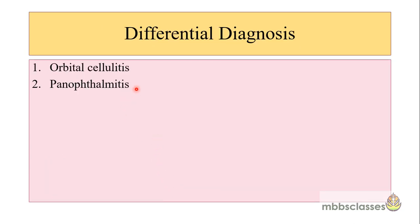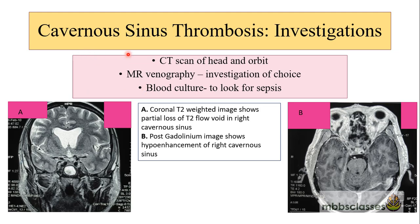For investigations, the patient is advised CT scan of the head and orbit, and MR venography, which is the investigation of choice. When the patient has chills and rigors, blood culture must be done to look for sepsis. On MRI, the coronal and axial images show areas of the cavernous sinus. In one image there is a partial loss of T2 flow void in the right cavernous sinus, and on contrast-enhanced imaging there is hypo-enhancement of the right cavernous sinus compared to the left. MR venography gives an accurate diagnosis of cavernous sinus thrombosis.